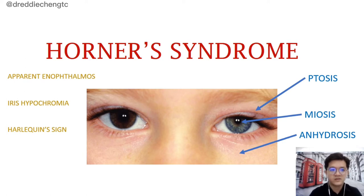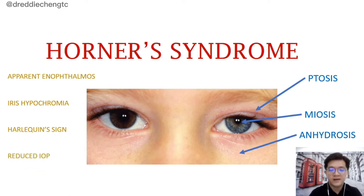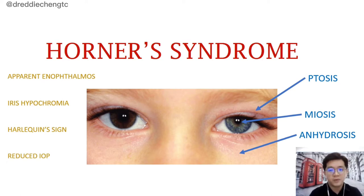This is called a harlequin sign. The ipsilateral eye will also usually have a reduced intraocular pressure because the ciliary body is also supplied by the sympathetic plexus.